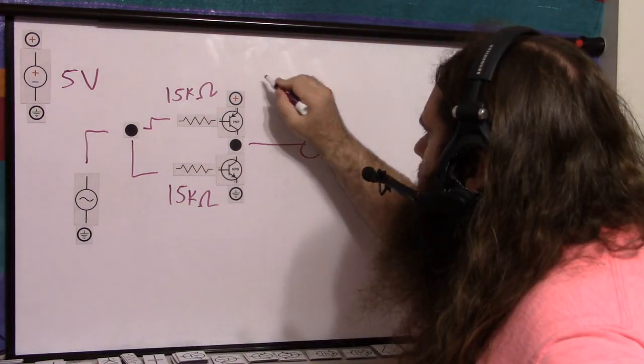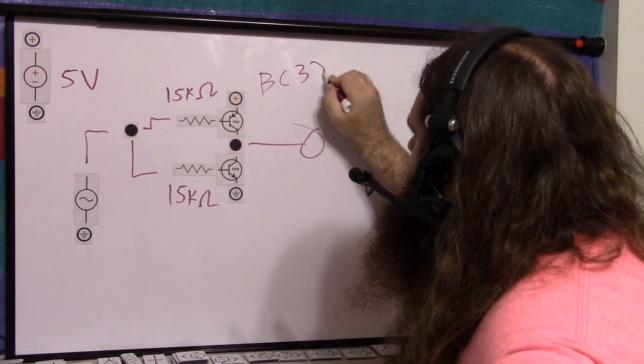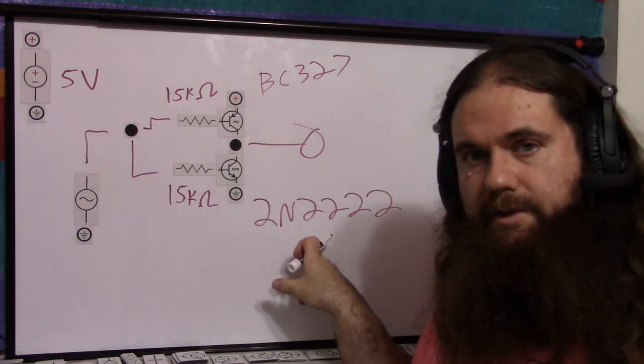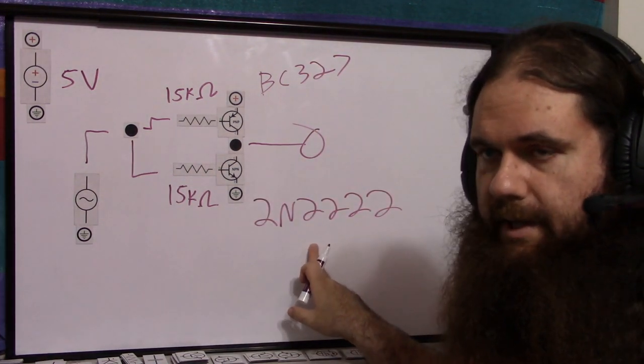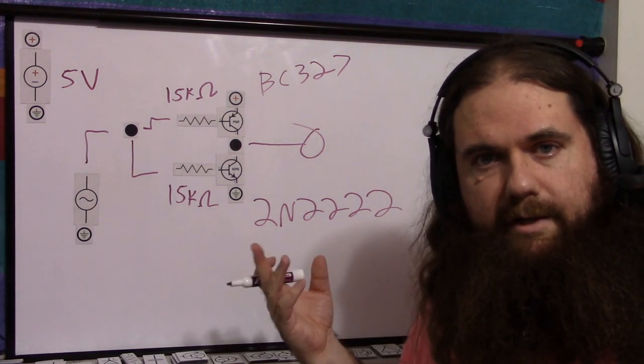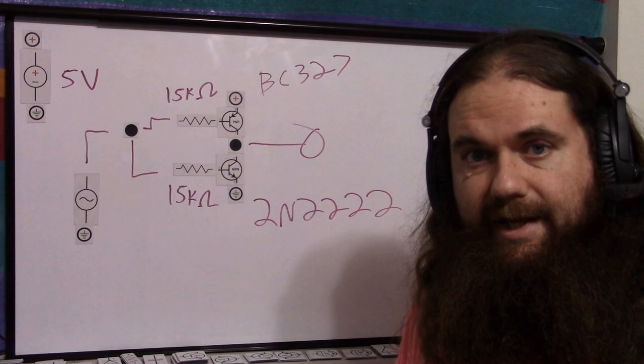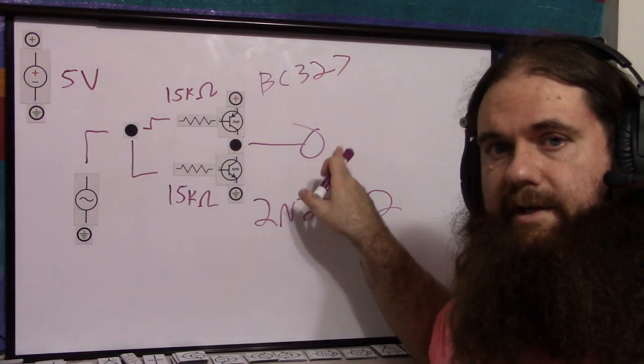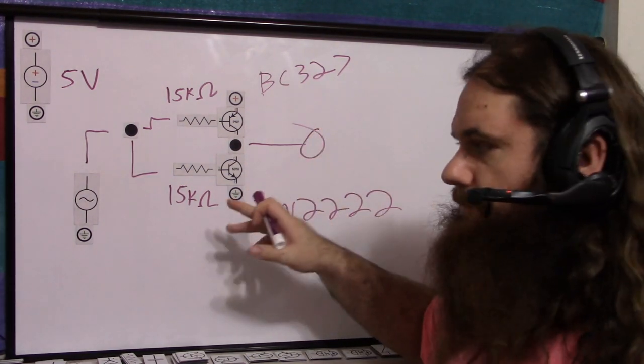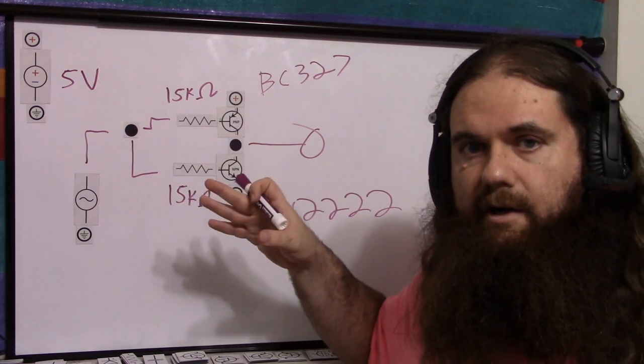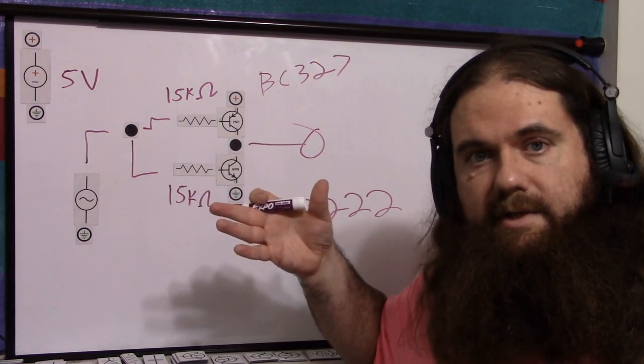I'm using the BC327 PNP and the 2N2222 NPN, just because both of these are rated for a lot of current. Way more current than I could possibly put through this thing anyway. But that's why I picked those. And the output is our power buffered square wave.